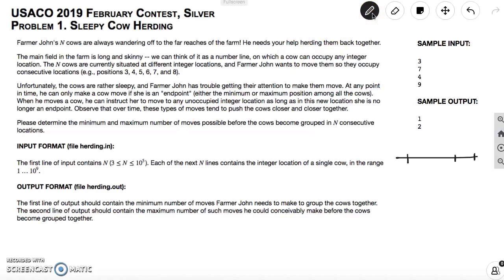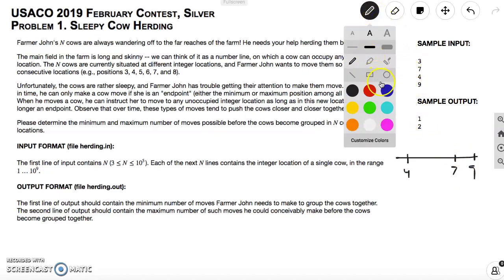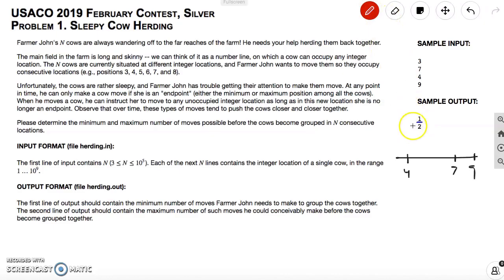If you are looking at the sample input, it tells us that we have three cows, and each of those cows is situated at each location at 7, at 4, and at 9. Then what they want for the output is they first want the number of moves, the least number of moves it takes to get everybody bunched together, and they also want the most number of moves it takes to get everybody bunched together.